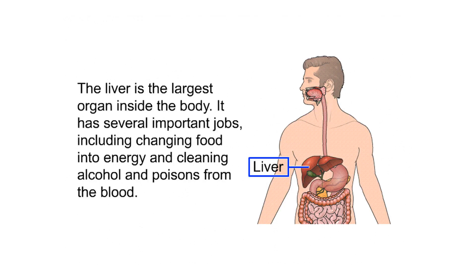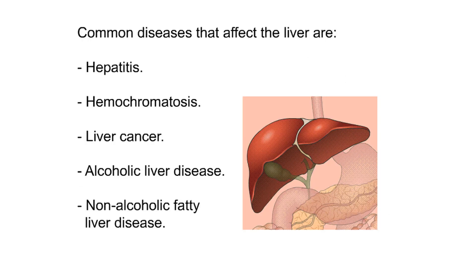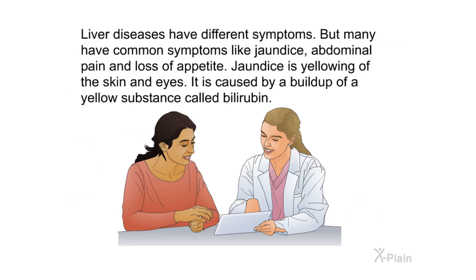Summary. The liver is the largest organ inside the body, with several important jobs including changing food into energy and cleaning alcohol and poisons from the blood. Common diseases that affect the liver include hepatitis, hemochromatosis, liver cancer, alcoholic liver disease, and non-alcoholic fatty liver disease. Liver diseases have different symptoms, but many share common symptoms like jaundice, abdominal pain, and loss of appetite. Jaundice is yellowing of the skin and eyes caused by a buildup of bilirubin.